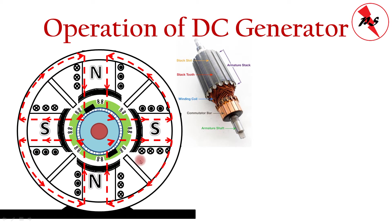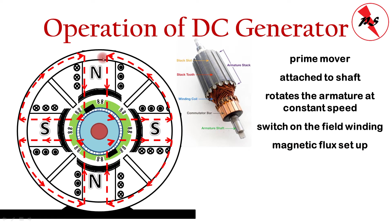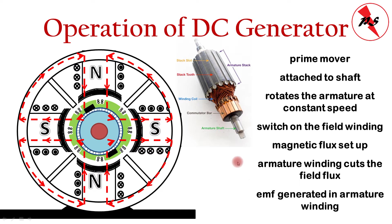To operate a DC machine as a generator, we rotate the entire armature structure using a prime mover. This prime mover is an external machine connected to the shaft; it rotates the armature at constant speed. We then switch on the field winding, which sets up a magnetic flux. The armature rotates and cuts through this magnetic flux, and due to electromagnetic induction, an EMF is induced in the armature winding, governed by Fleming's right-hand rule.